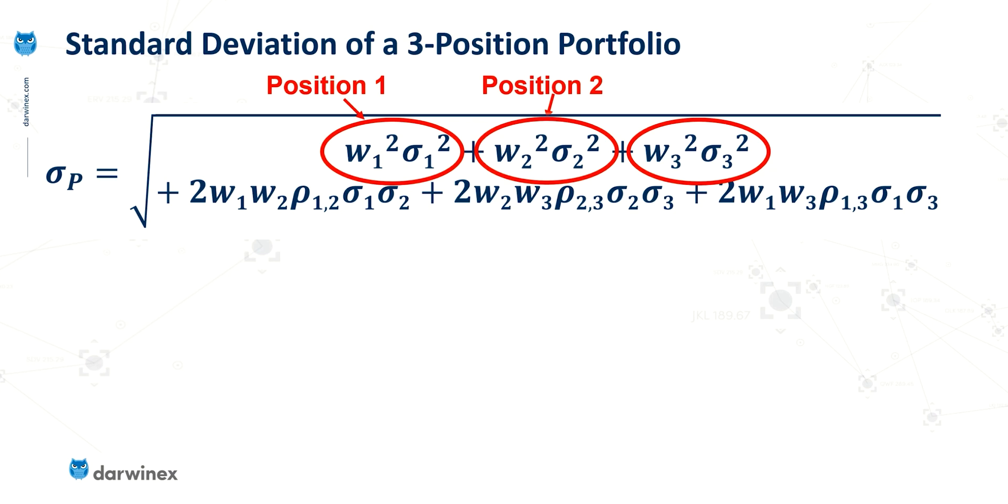So we have one of these for each of the positions and that would remain the case regardless of how many positions we had. If we had a hundred positions we would have 100 terms like this which was the weight of each position squared multiplied by the standard deviation of that position squared. And it's as simple as that.